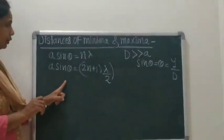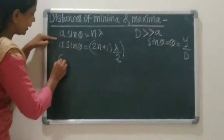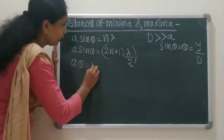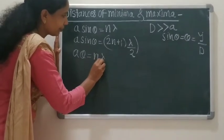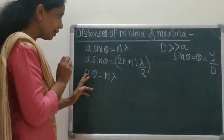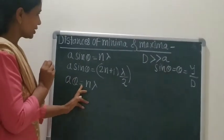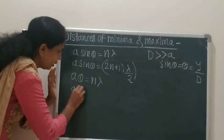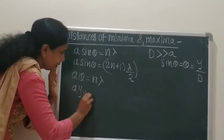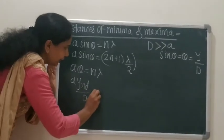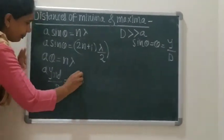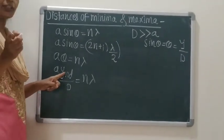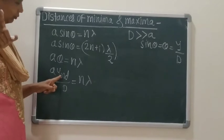Putting this substitution into the above equation, we get a sin θ = nλ, therefore a·θ = nλ. Now substituting the value of θ: a·(y_nd / D) = nλ, where y_nd is the distance of the dark fringe from the central bright fringe.